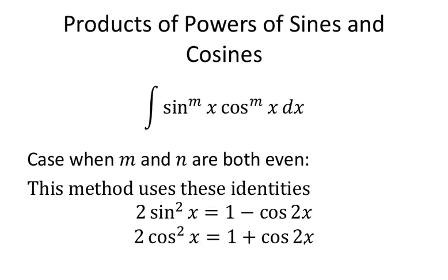The integral of cosine of 2x is one half sine of 2x, so it's not too bad. The 2x is a lot better than cosine squared, and that would simplify a lot of these cases as well.